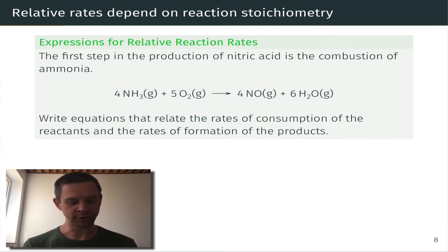we're told that the first step in the production of nitric acid is the combustion of ammonia. A balanced chemical equation is given for this here. Our goal is to write equations that relate the rates of consumption of the reactants and the rates of formation or production of the products. And before we dive into that, let's just take a look at the balanced chemical equation and kind of get our bearings.